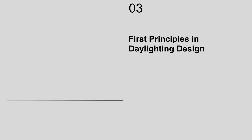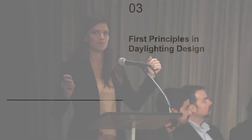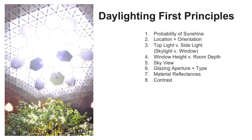Now I'm going to talk about my other passion: first principles and daylighting. We can then reflect back on those general guidelines to see if something needs more investigation. When you think about daylight, we think about probability of sunshine — what's the climate? Location and orientation of the aperture. Top light versus side light — is it a skylight or a window? Window height versus room depth. Whether we have sky view or if it's completely obstructed. Glazing aperture and type of glazing. Material reflectance and contrast. I'll go through these pretty quickly.